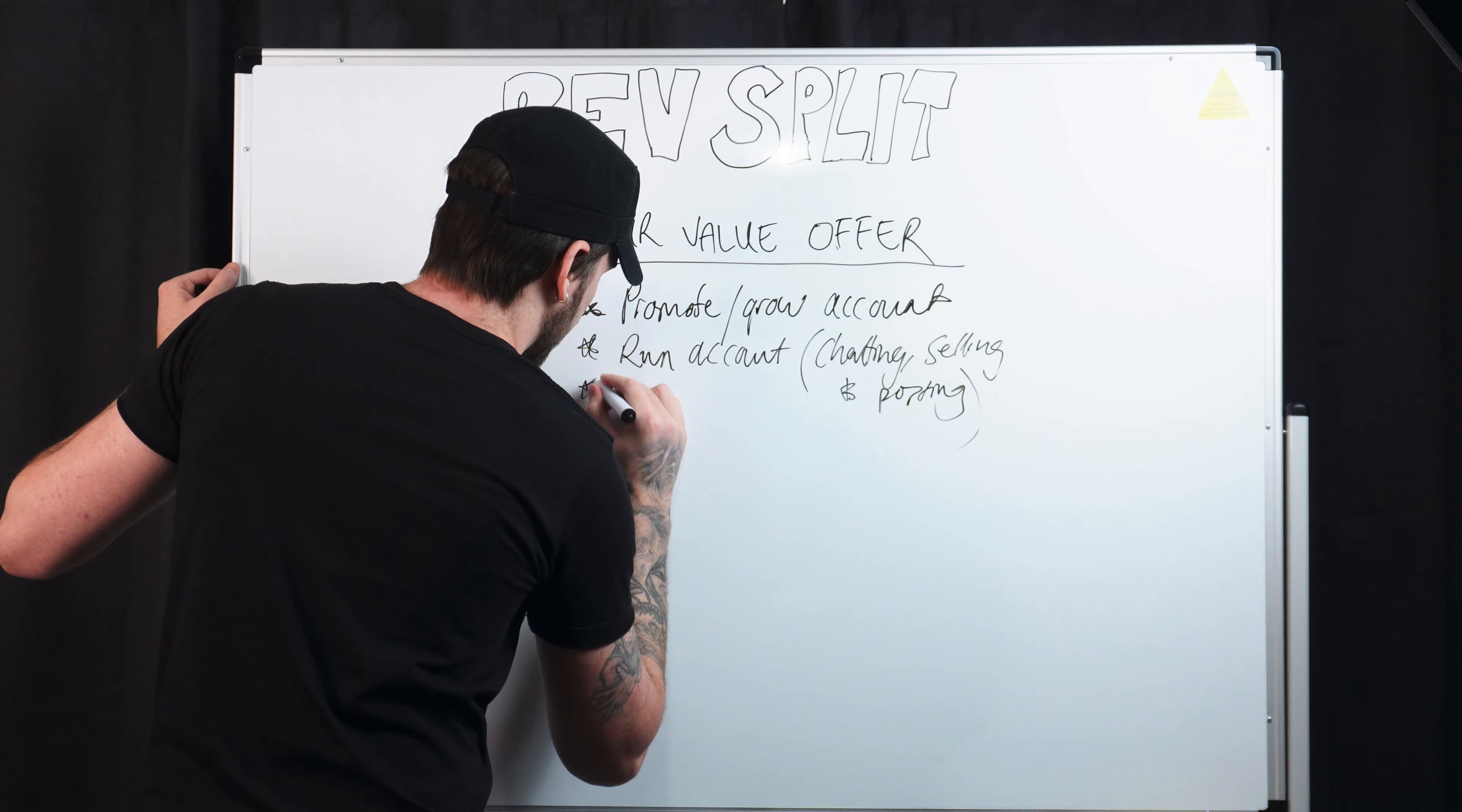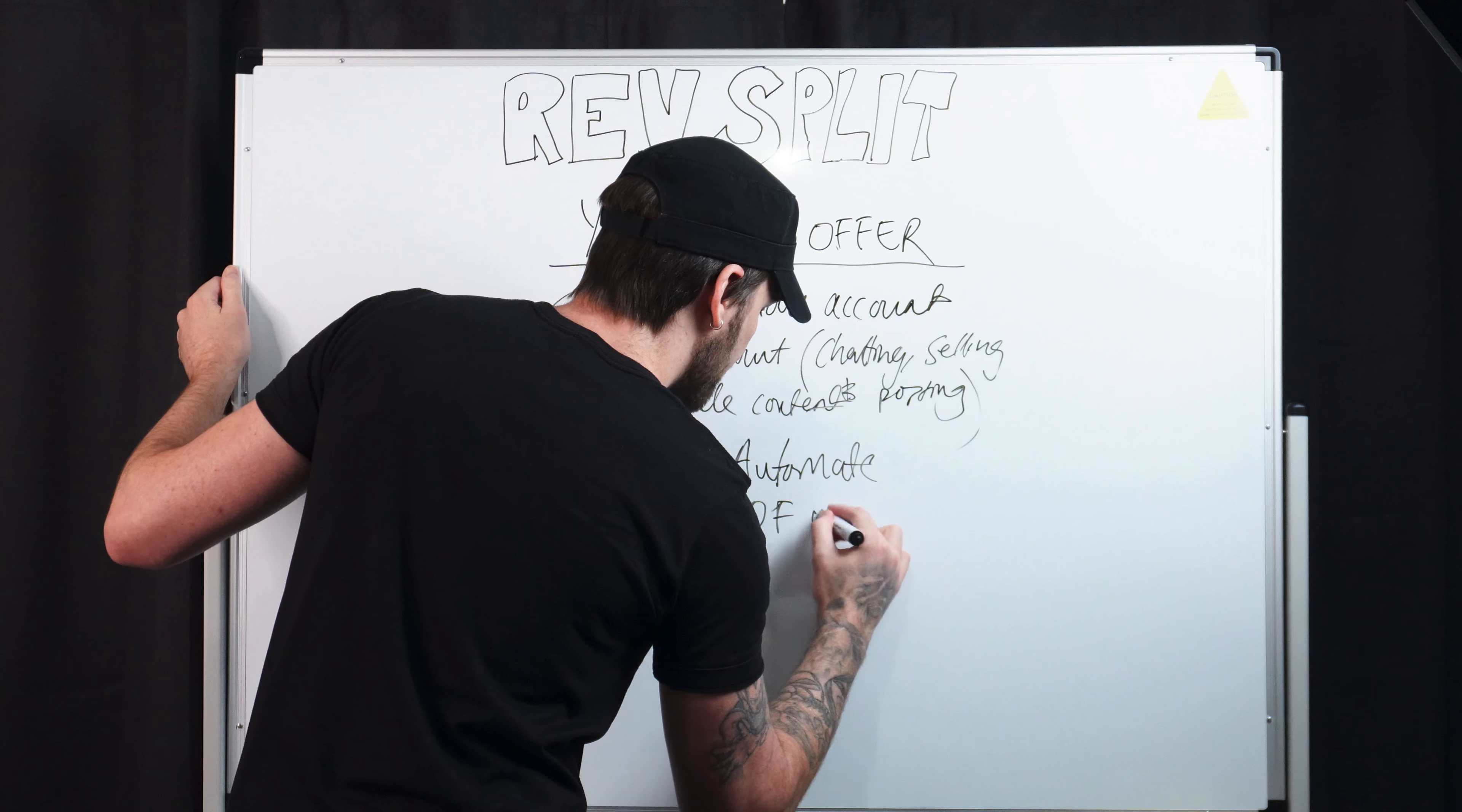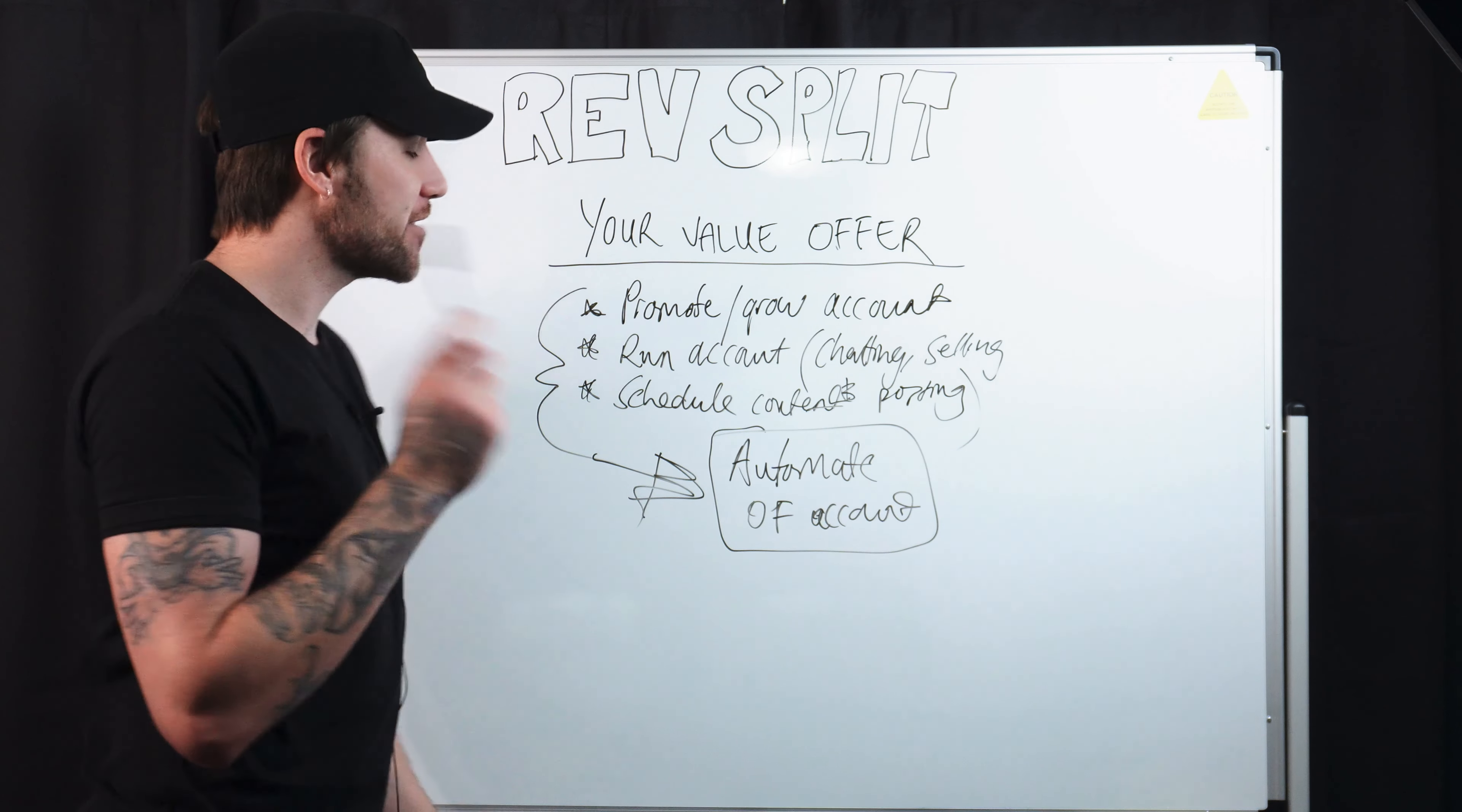You're also offering to schedule content but this would come under posting content so scheduling content. Now what all this equals is you are essentially offering to automate the entire OF account. So when you're pitching the model and telling her the revenue split that you proposed and she pushes back, just remember this, you are offering to automate the entire OF account which means she does nothing and money comes in. Alright, so now that you've got that in your head, we'll go over some revenue splits.